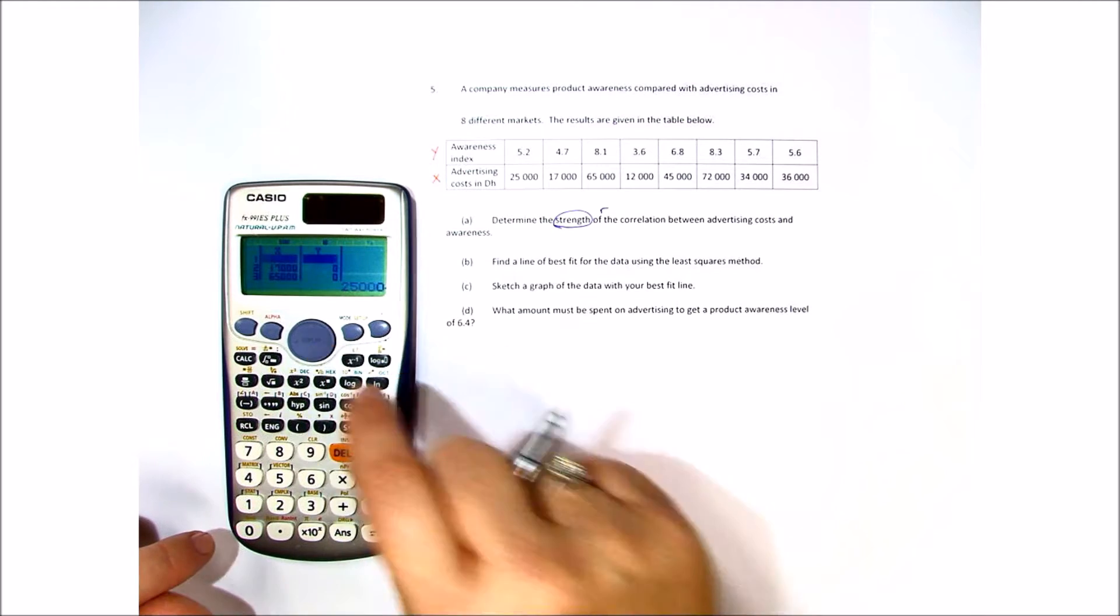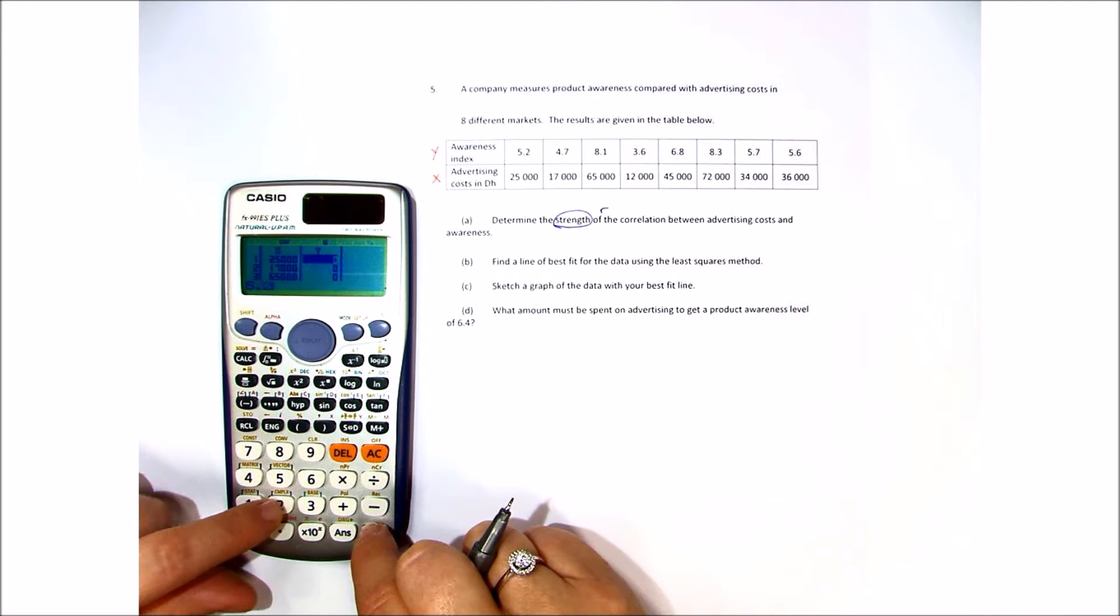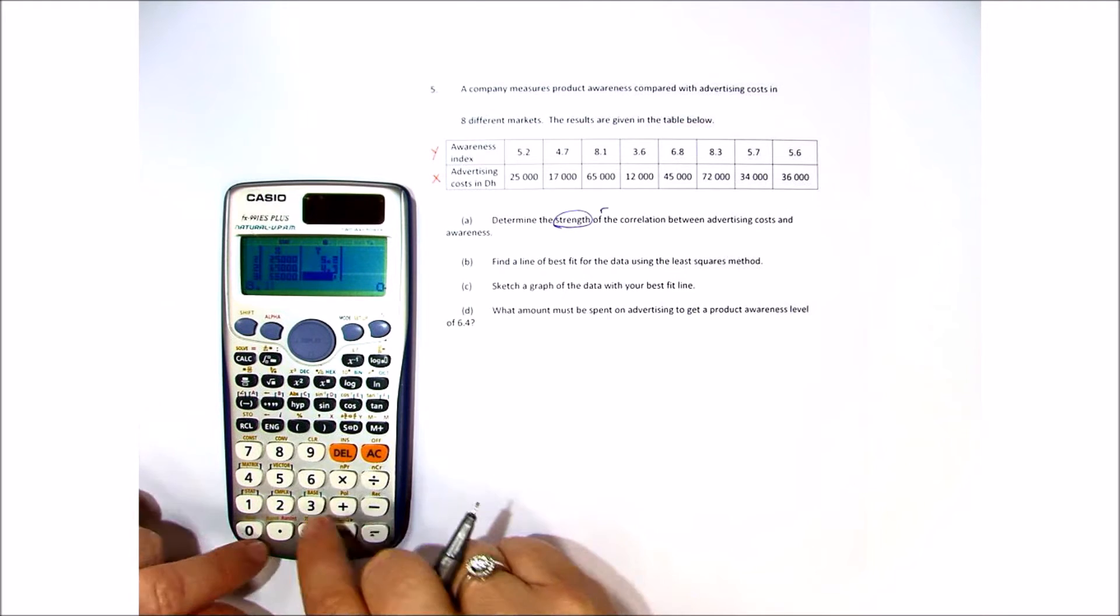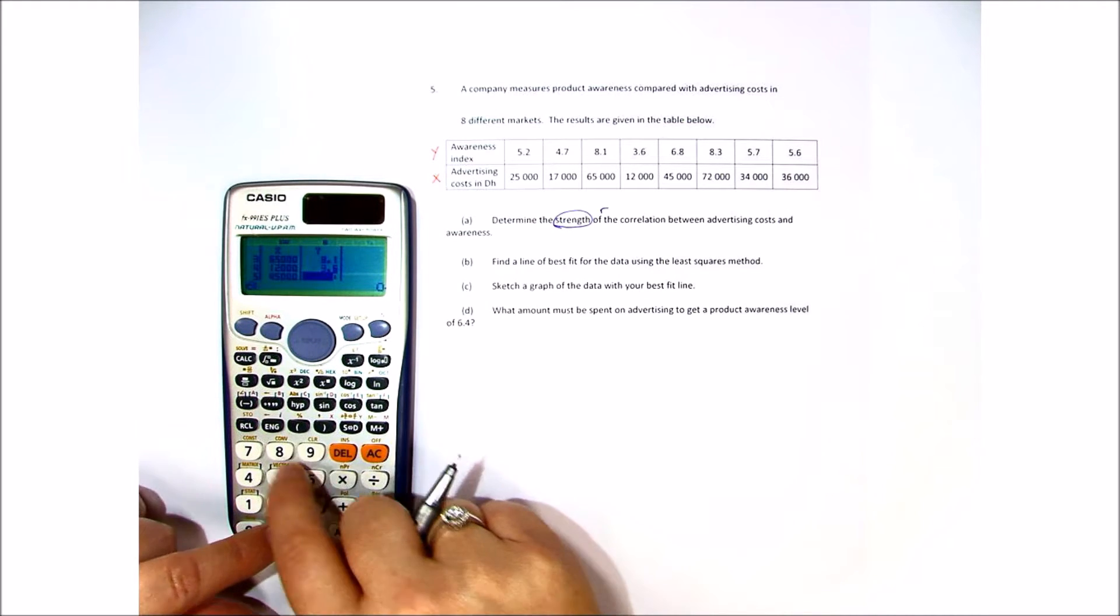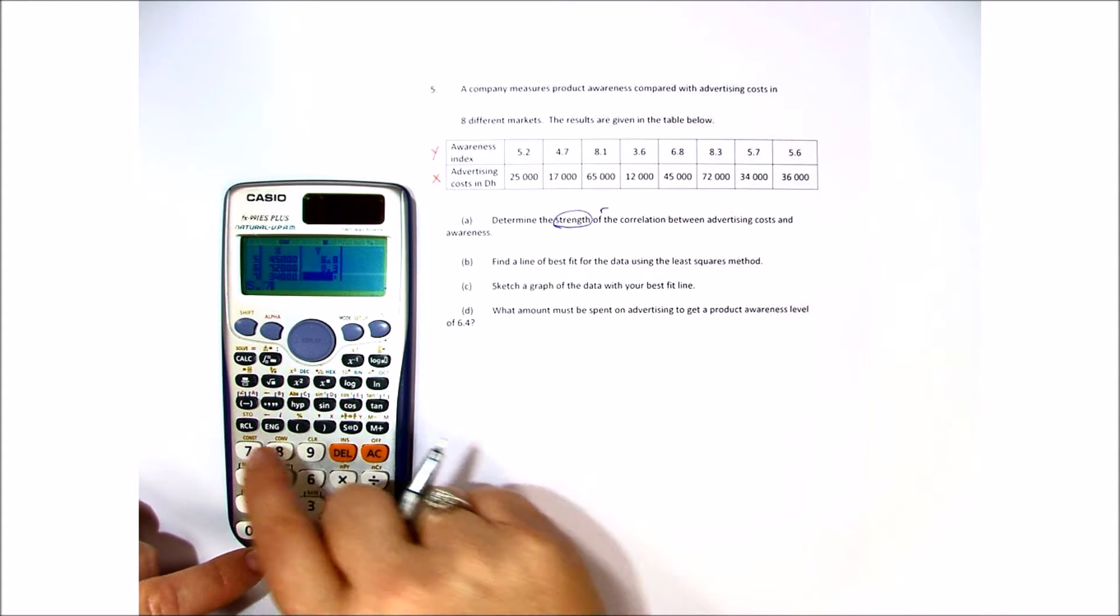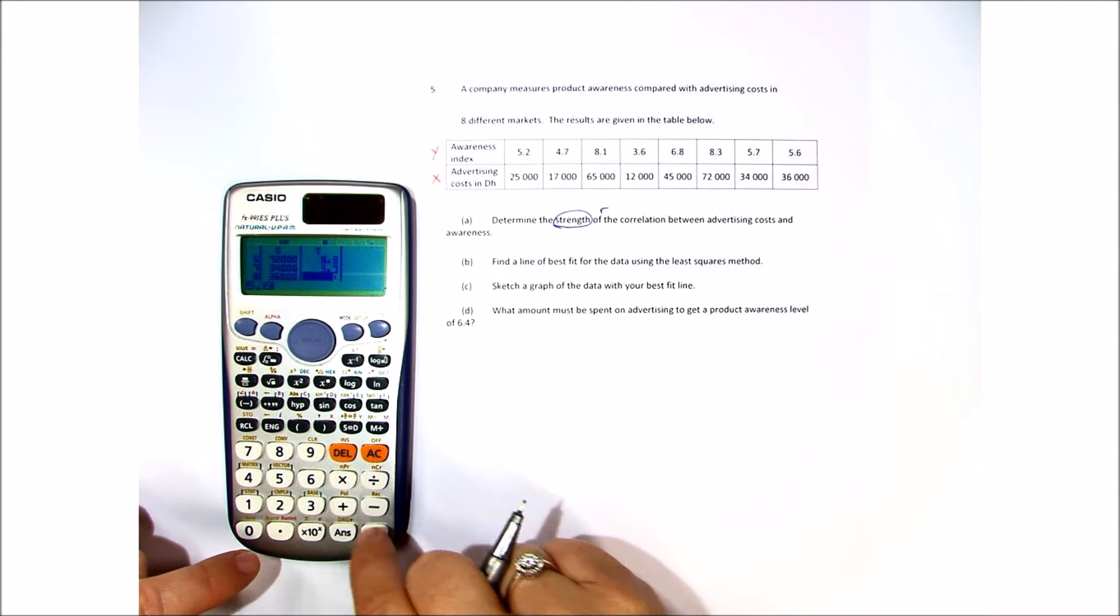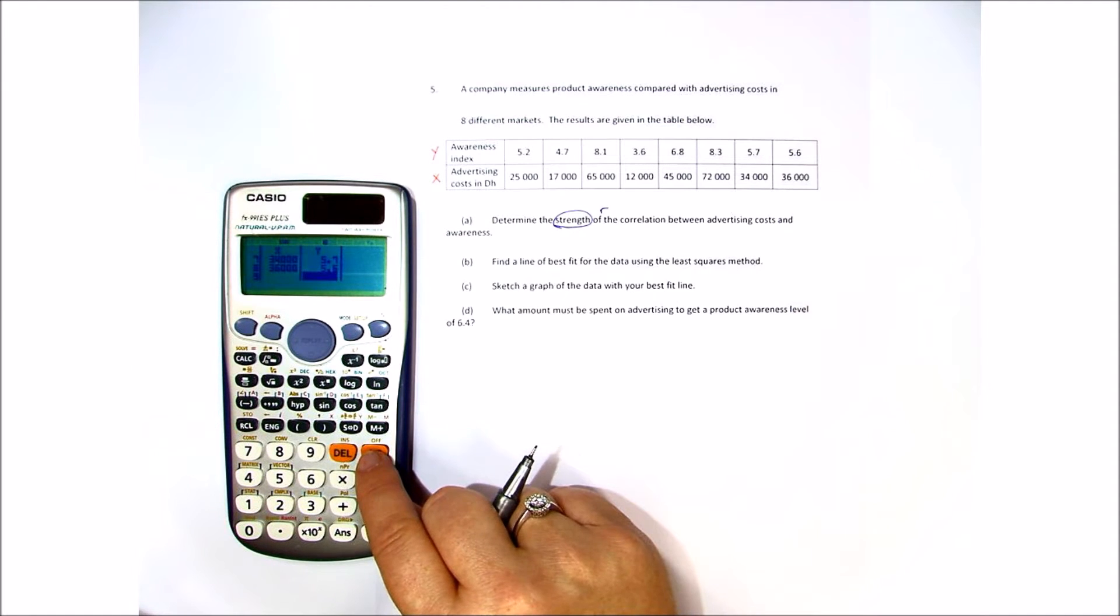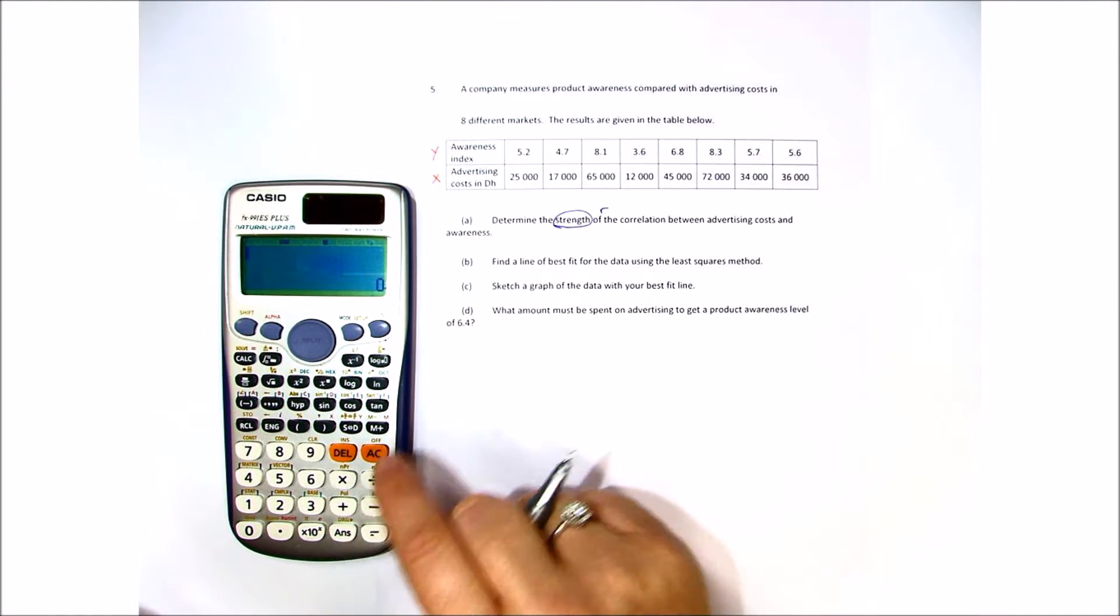And once you get X, you need to move over and do the same to Y. And if you notice, the two should line up. When you're ready, go back to the home screen.